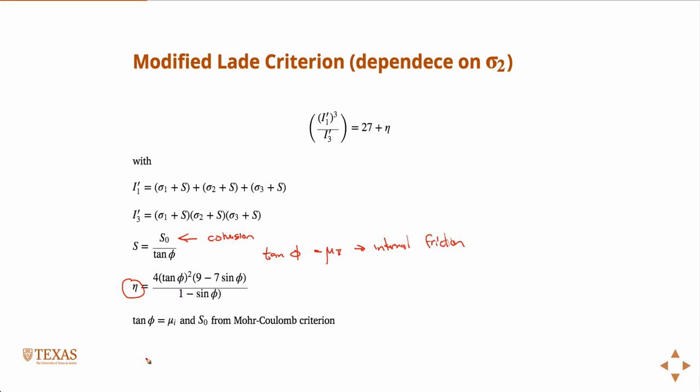But the reason we like it is because the most common material properties that you're going to have in terms of these plasticity models, or failure models, come from the Mohr-Coulomb. They're the most ubiquitous in use. The nice thing about this is it's a little bit more sophisticated model, but we only need the same parameters: the internal friction and the cohesion.